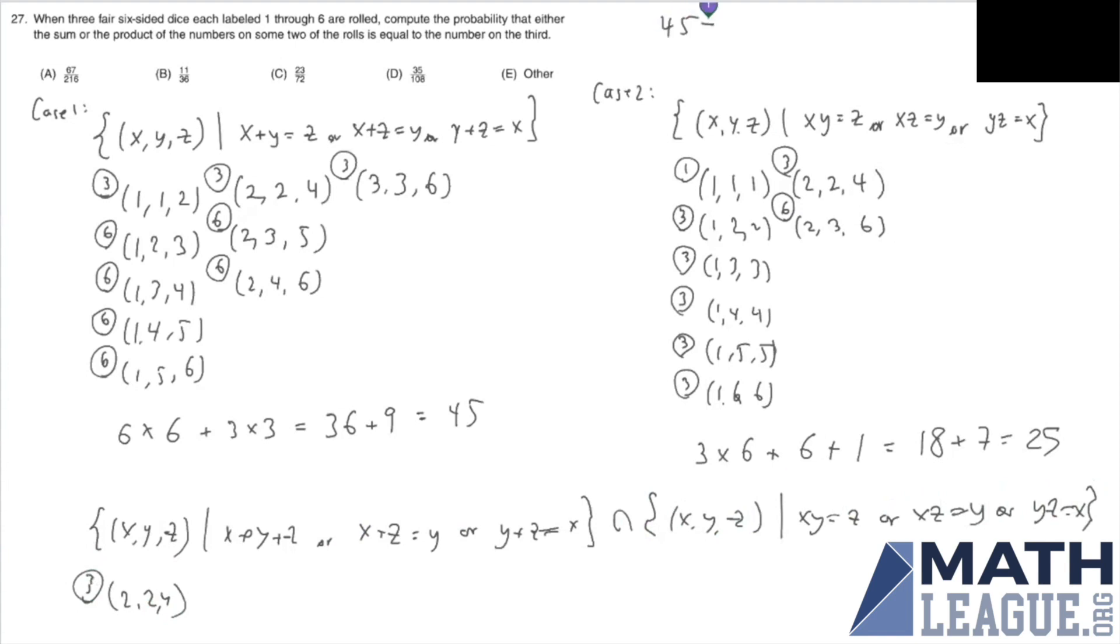And so we have our final count. That is 45 plus 25 minus 3, and that's 67. When we're rolling three fair six-sided dice, there are 216 ways to get any three numbers, 6 cubed. And so our answer is 67 over 216.